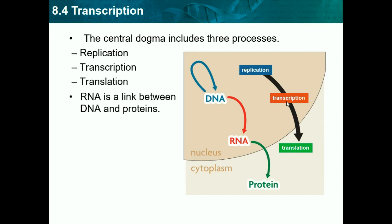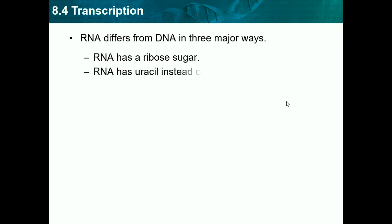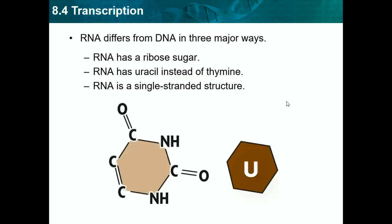RNA is the missing link between DNA and proteins. RNA differs from DNA in three major ways: RNA has a ribose sugar, RNA has uracil instead of thymine, and RNA is a single-stranded structure, unlike DNA which has two strands because it's a double helix.